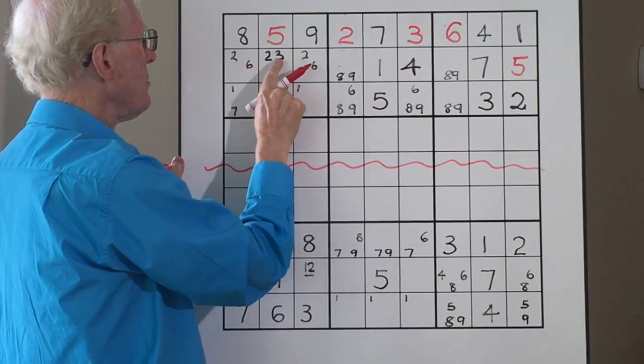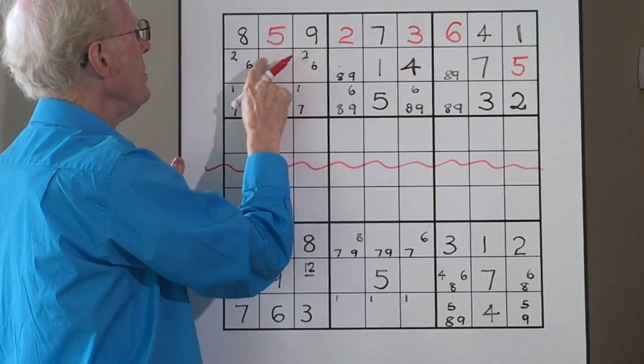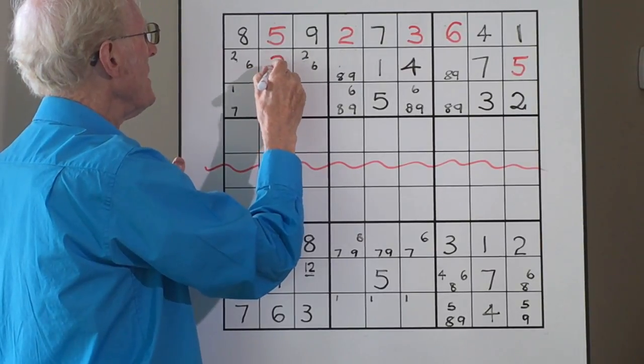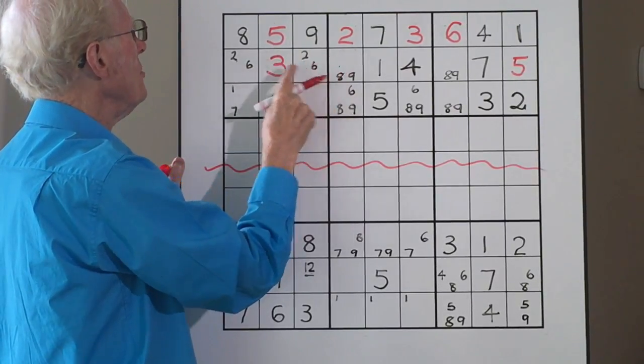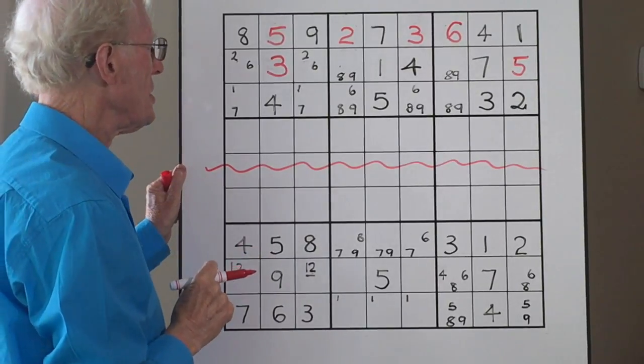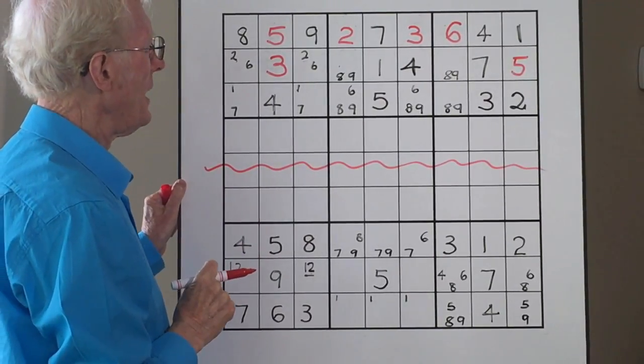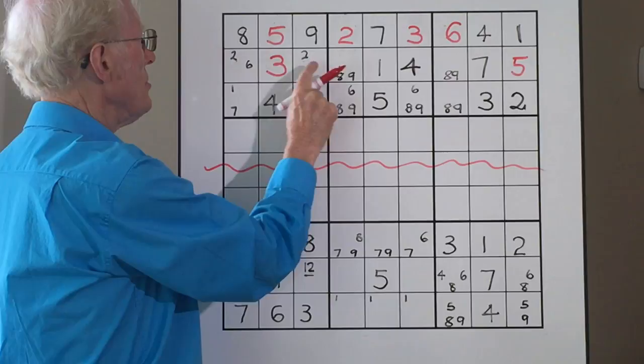The ramification of that three means that this three and that three—bottom, top—the three has to be in the middle here. And guess what, this three is going to be a real three, which leaves us with another matching pair and a two and a six. So look at all the changes we made just by noticing those two sixes.